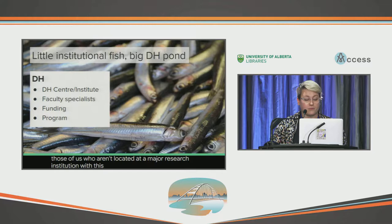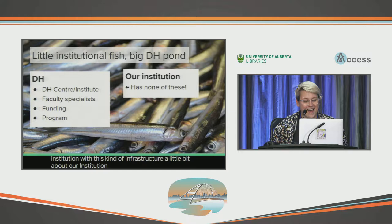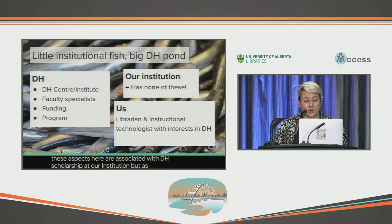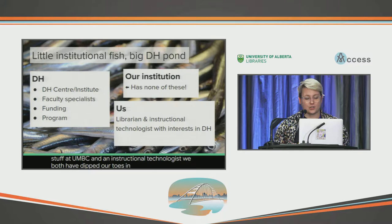A little bit about our institution: we have none of these things. We're very small — about 3,500 students — and humanities programs are definitely not at the forefront of our offerings. None of these aspects are associated with DH scholarship at our institution. But as a librarian overseeing both systems and web — tech-related stuff at UNBC — and an instructional technologist, we've both dipped our toes in DH-adjacent work and felt that an introductory course could be beneficial despite not having this infrastructure.